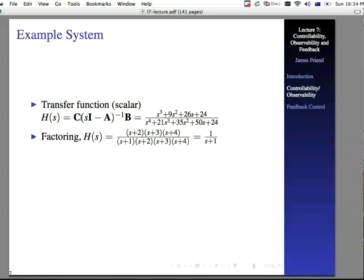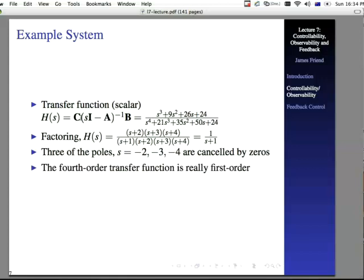Well, like you might have seen in the third year, there is such a thing as called zero pole cancellation. And it works just like regular math. If S plus 2 is on top and bottom, we can, in a sense, cancel those out, and we're left with 1 over S plus 1. Because three of the poles are canceled by the zeros, with respect to similar zeros. So this fourth order transfer function really is first order.